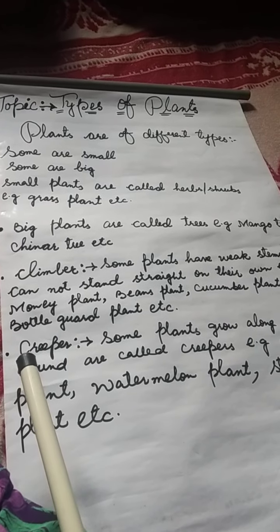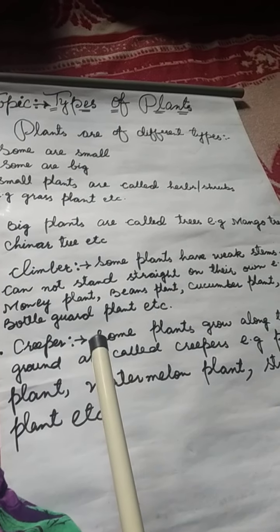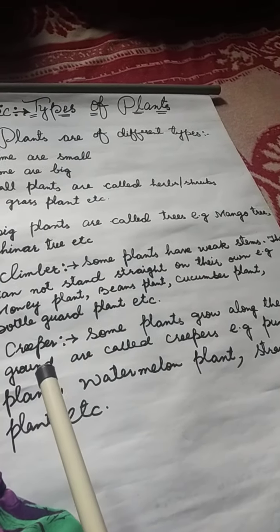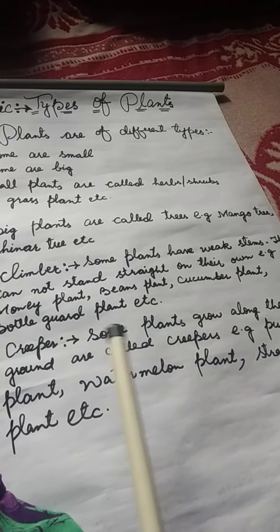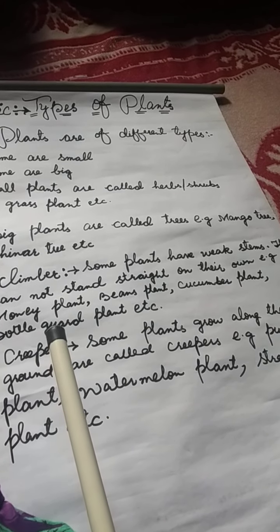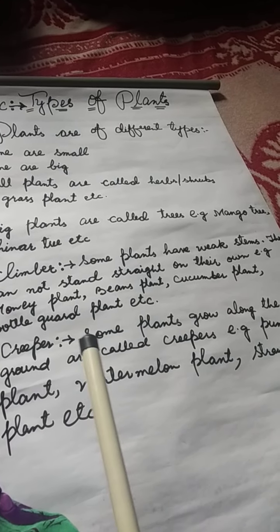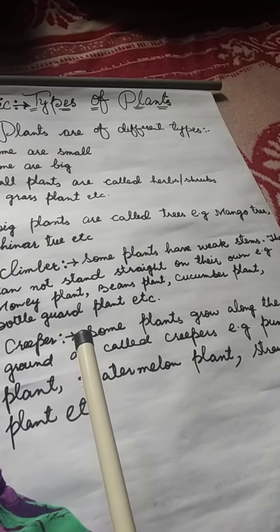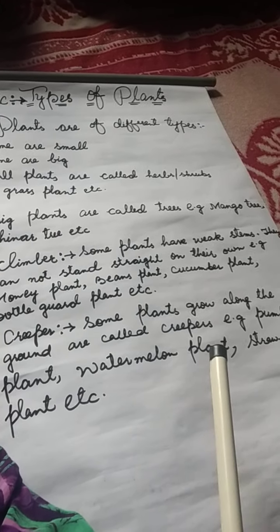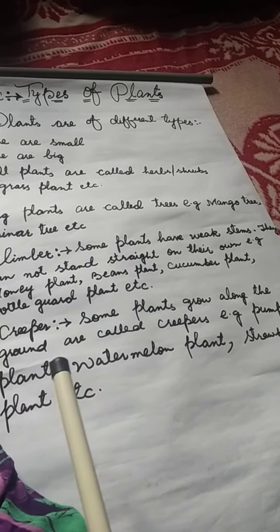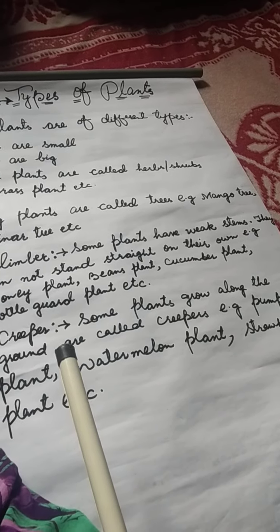The last point is creepers. Some plants grow along the ground — they are called creepers. Jho ground ke oopar ugtate hain, unko bolte hain creepers. Examples: pumpkin plant, watermelon plant, strawberry plant.